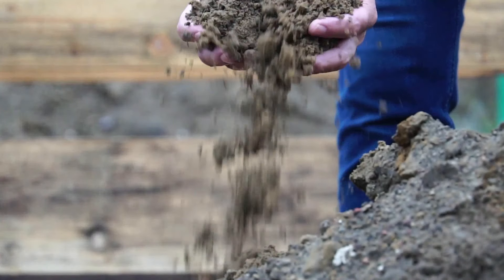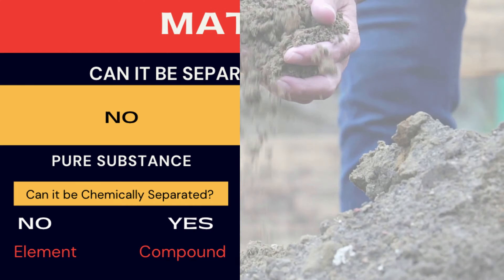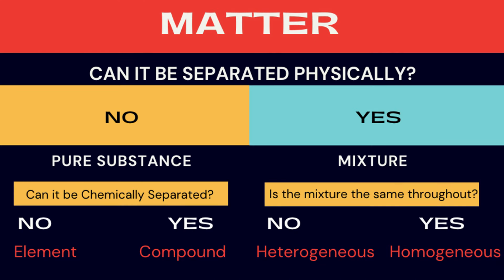Here's a simple flow chart that will help you classify something as either a pure substance or a mixture. Starting at the top: can it be separated physically? If no, then it's a pure substance. For a pure substance, ask: can it be separated by a chemical process? If no, it's an element. If yes, it's a compound.